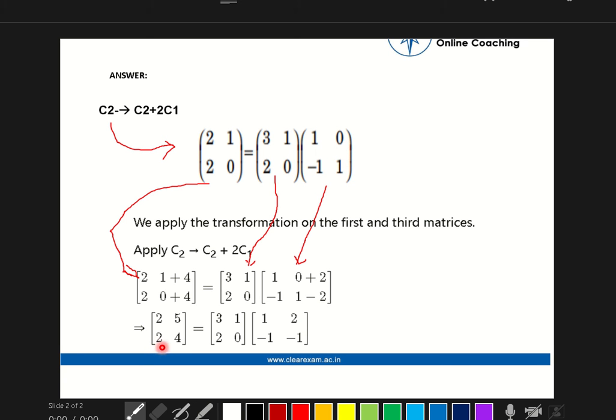After solving this we will get the final answer: [2, 5; 2, 4], [3, 1; 2, 0], [1, 2; -1, -1].